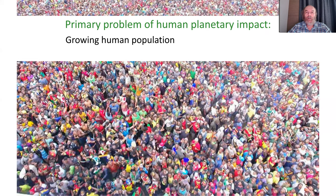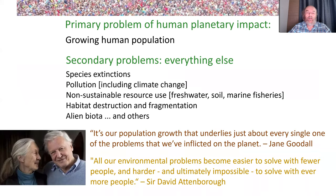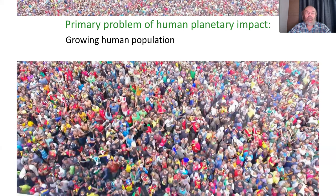My argument is that the primary problem of human planetary impact is human population. The growing human population creates a lot of secondary problems: species extinctions, pollution, non-sustainable resource use, habitat destruction, fragmentation, alien biota, and so on. Jane Goodall says it's our population growth that underlies just about every single one of the problems we have inflicted on the planet.